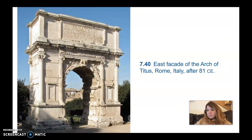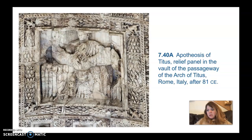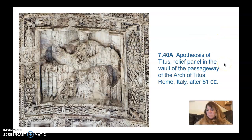Still on the Arch of Titus, this is a relief panel in the vault of the passageway called the Apotheosis of Titus, showing Titus ascending to heaven — apotheosis meaning ascent to heaven. Most emperors were declared gods after death, though some, like Nero, were not. Emperors who became enemies of the state, like Nero, went down as tyrants and would have had their names essentially erased from public inscriptions.